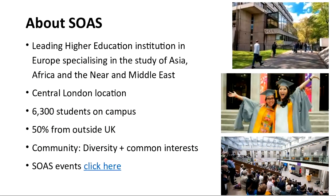SOAS has a central London location, right in the middle of London. More importantly, we are very closely located with universities such as LSE, King's College London, UCL, and Birkbeck. That means you are not only part of the SOAS community but also part of this closely knit group of London universities — you can attend seminars and events there and create collaborations.